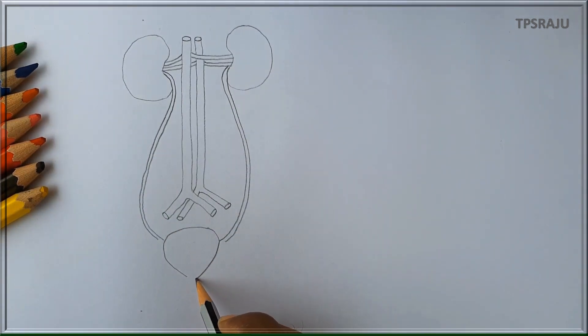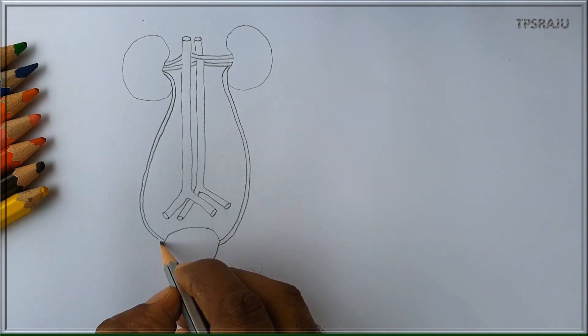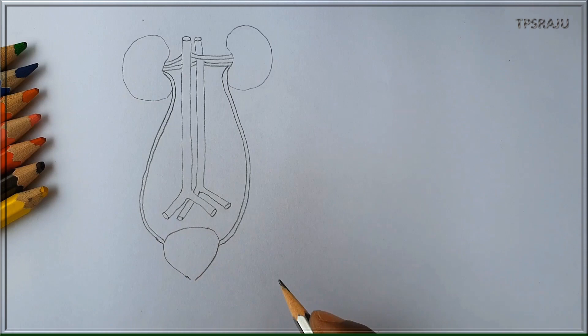These ureters open into pear shaped sac like structure called urinary bladder. Urinary bladder opens to the outside through a tube like structure called urethra.